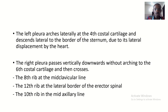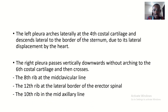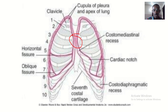The left pleura notches laterally at the fourth costal cartilage and descends lateral to the border of the sternum, due to its lateral displacement by the heart. On this image you can see that the left pleura at the fourth cartilage notches laterally, away from the midline.